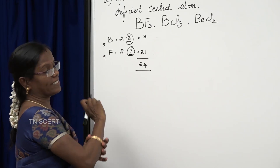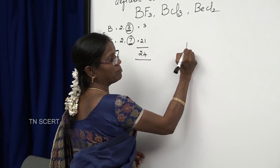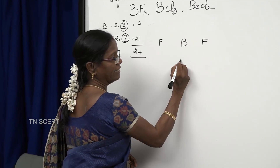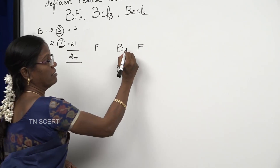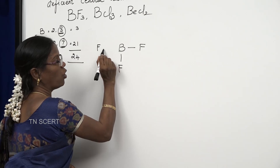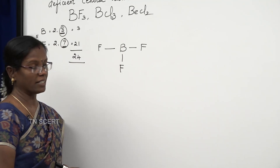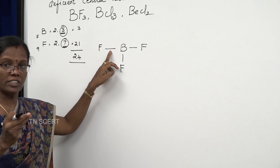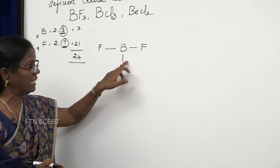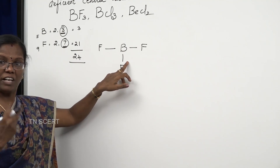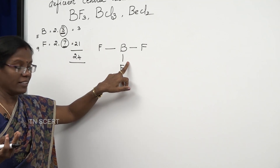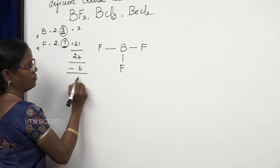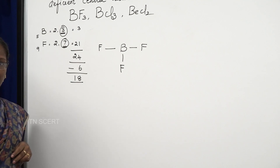In writing the Lewis structure, the first step is to write the atoms and put single bonds between them. For each bond 2 electrons are spent; for 3 bonds we have given 6 electrons. So 24 minus 6 leaves us with 18 electrons remaining.